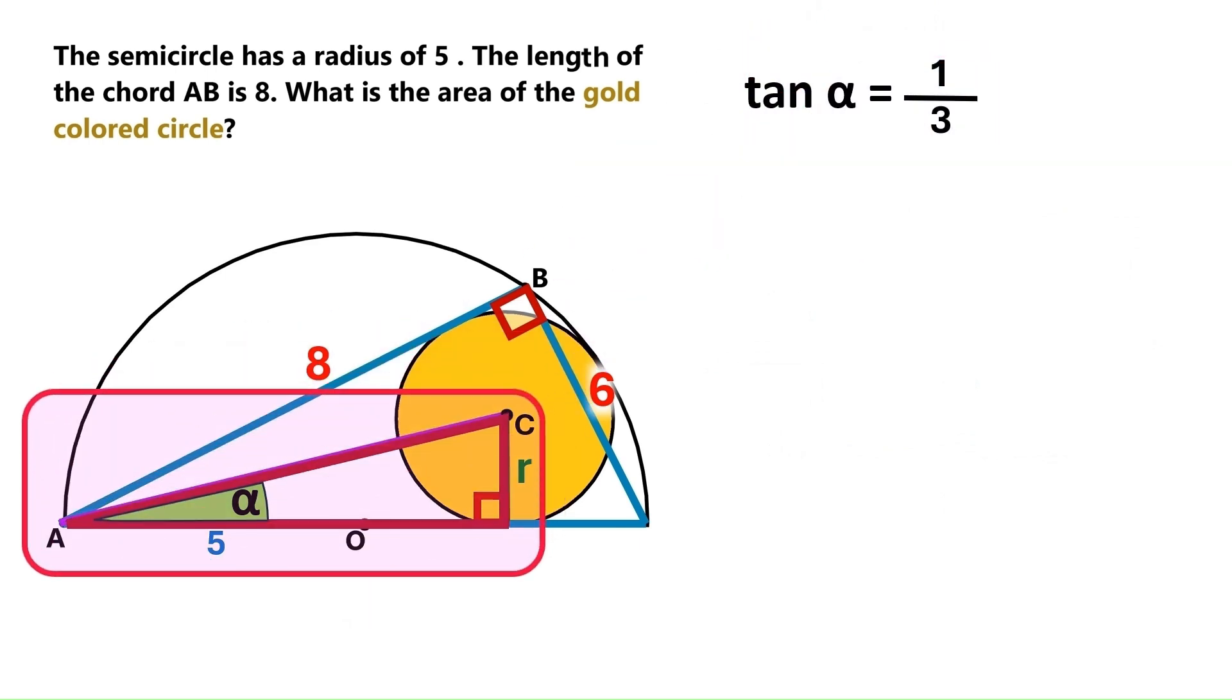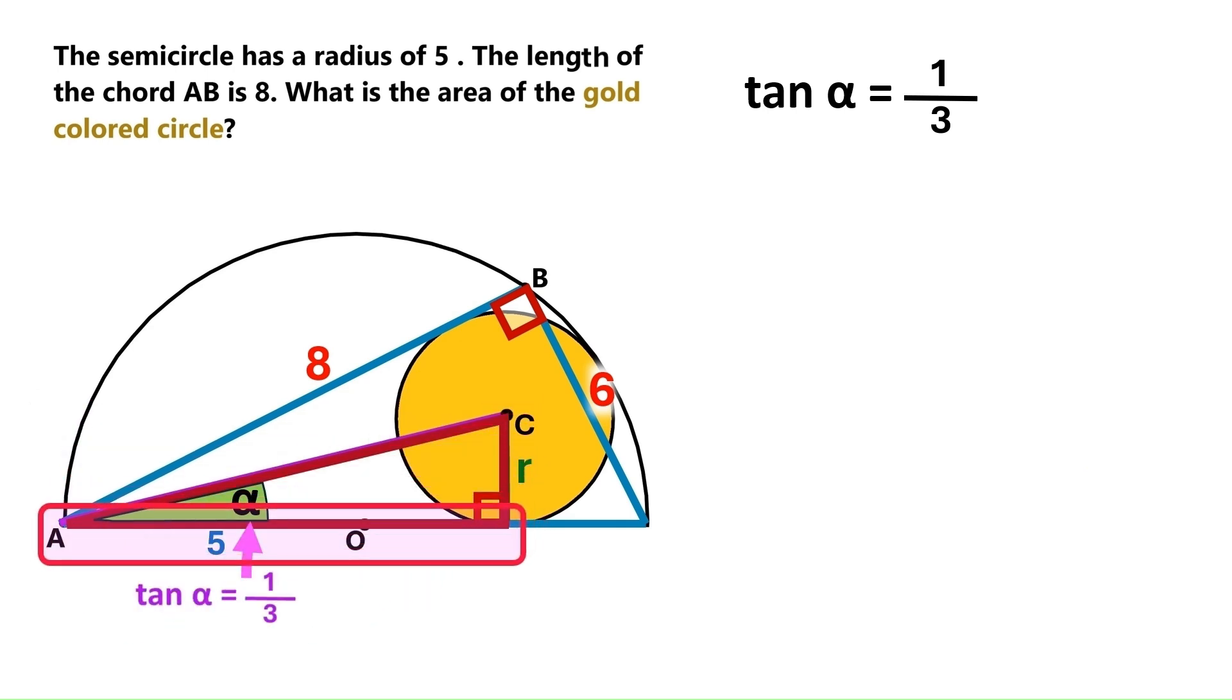We can now go back to our little right triangle. We know tangent alpha is 1 over 3. So if this side is r, then this side must be 3r. And this distance here is 5, which means this segment has to be 3r minus 5.